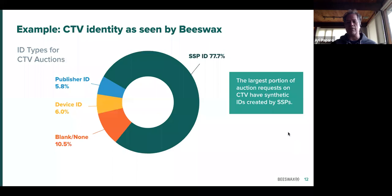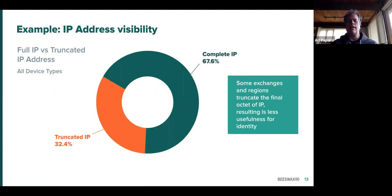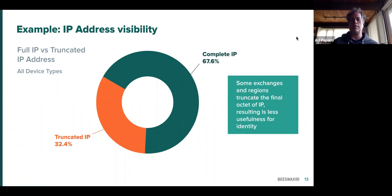Another data point I looked at is IP address. IP address is a source of identity that is very useful in some circumstances, but has some baggage on the privacy side — some jurisdictions and some privacy rules consider it personal data. What's interesting is that a third of the IP addresses that come through Beeswax on auction are truncated, meaning the final octet of the IP is removed. So it's less personally identifiable and therefore less useful for any sort of identity. I thought the number was going to be higher in terms of truncated, but this was the first time I've seen the data pulled in this way.